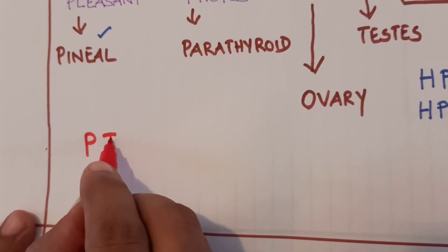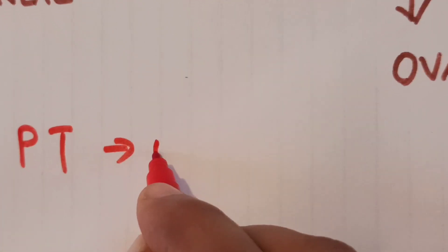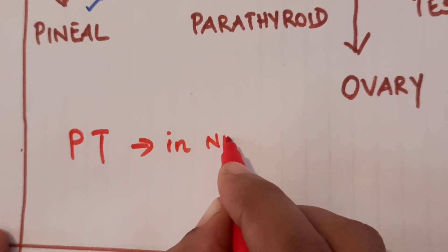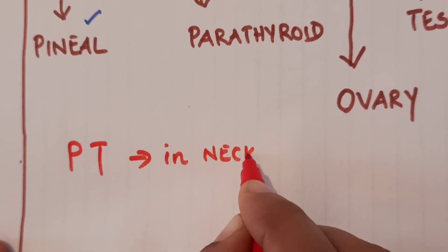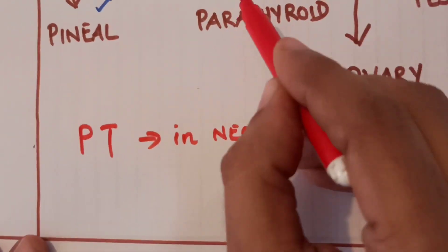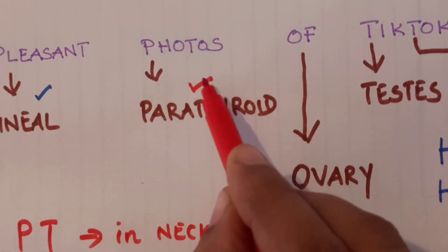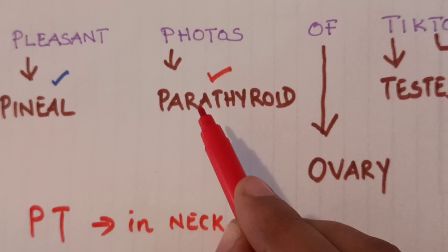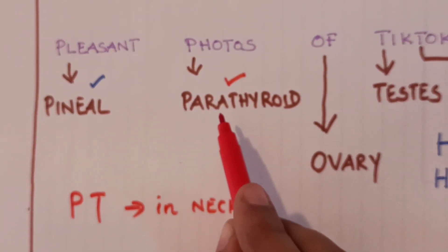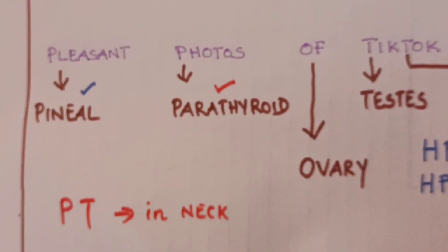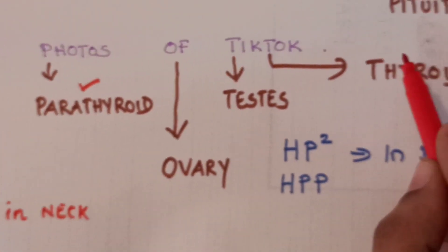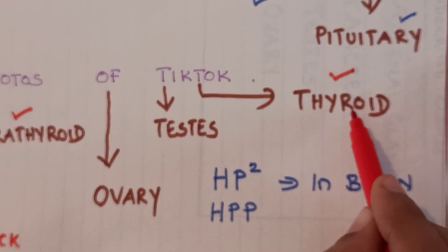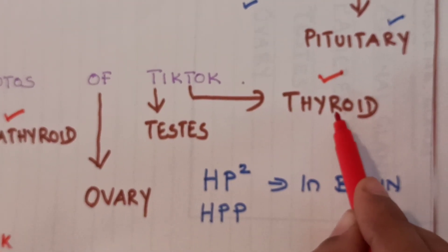PT in neck. Parathyroid and thyroid glands are located in the neck region. These two glands — parathyroid and thyroid — are both found in the neck region.